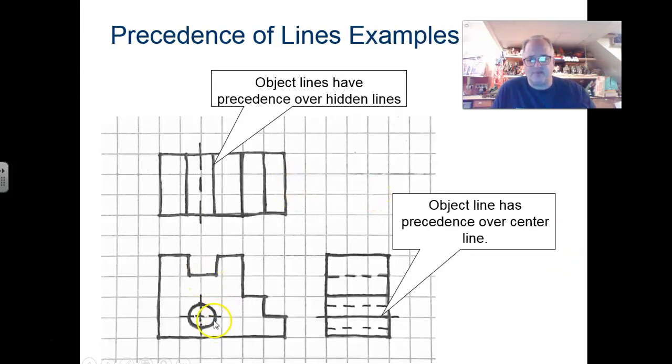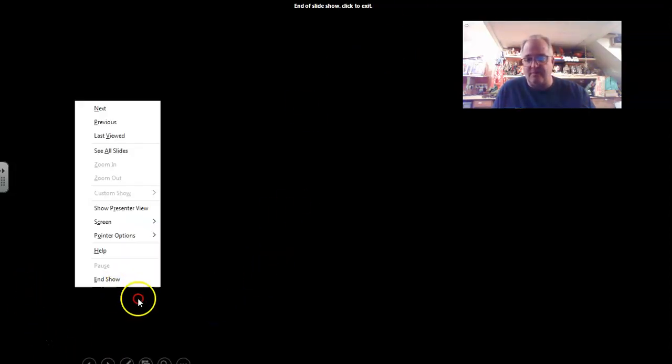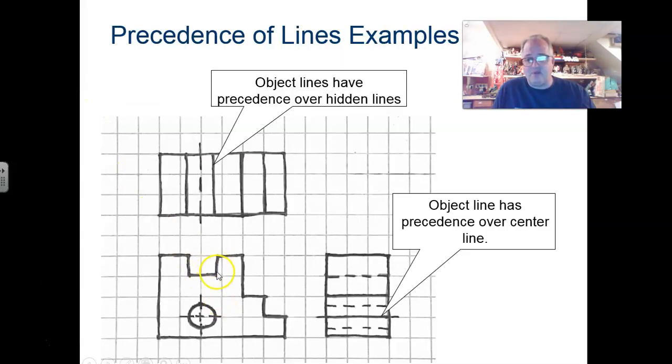Here's an example. You'll see here, as we go, there would be a hidden line here. But as we transfer all of this and project up, this tangency point of this circle right here is in line with this edge of that slot. Your object line here is going to take precedence over the hidden line that would be created by this feature. And the same thing going this way.